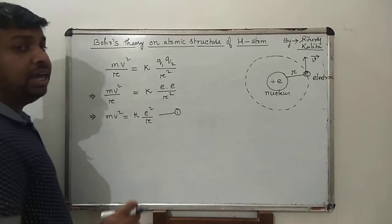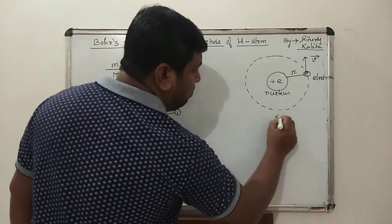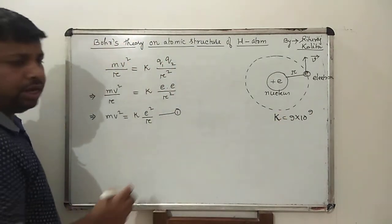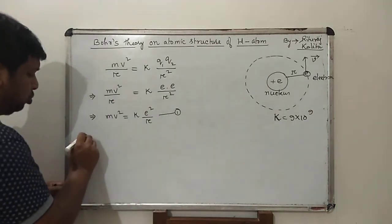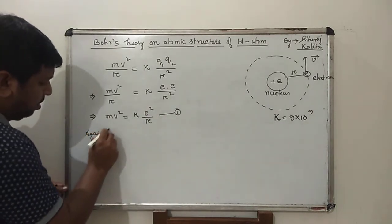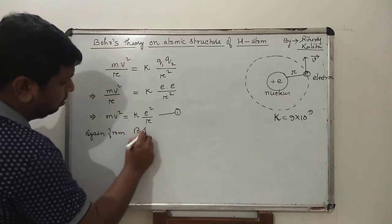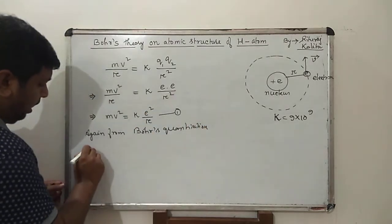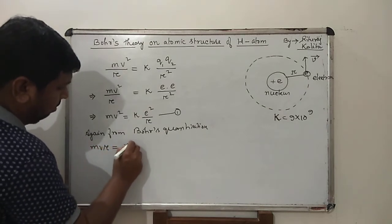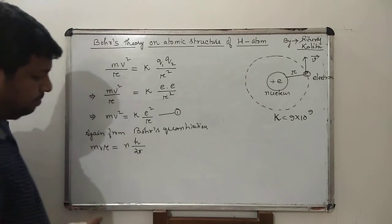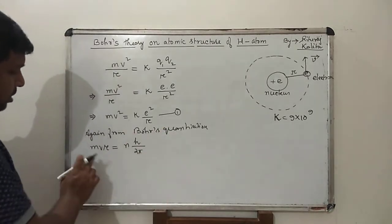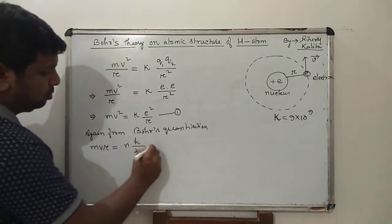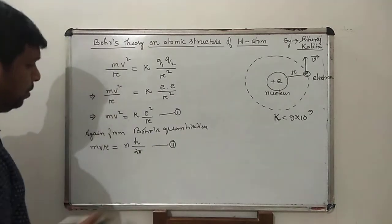Coulomb's constant K equals 9×10⁹ N·m²/C². Again, from Bohr's quantization postulate, we get MVR = Nh/2π, where M is mass, V is velocity, R is radius, N is the orbit number, and h is Planck's constant. This is equation number 2.